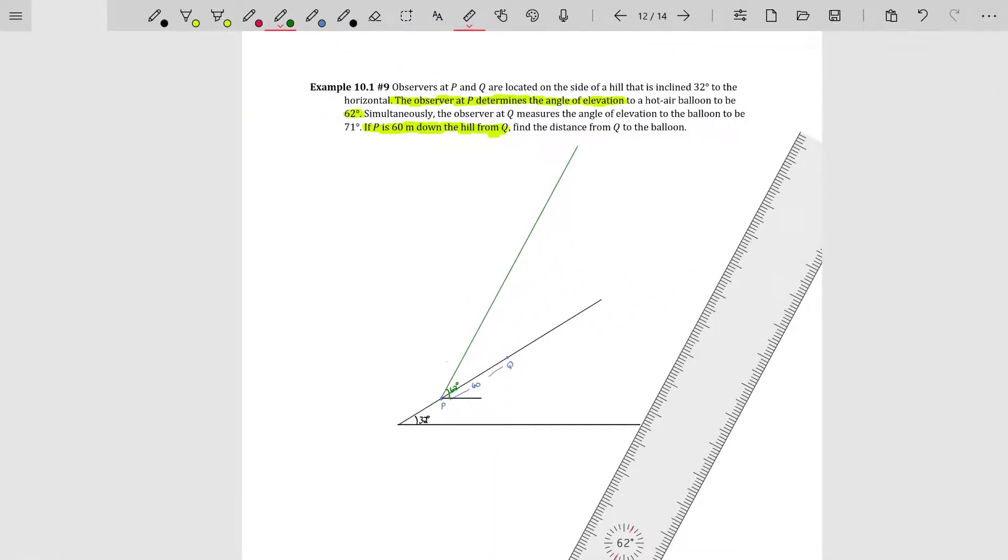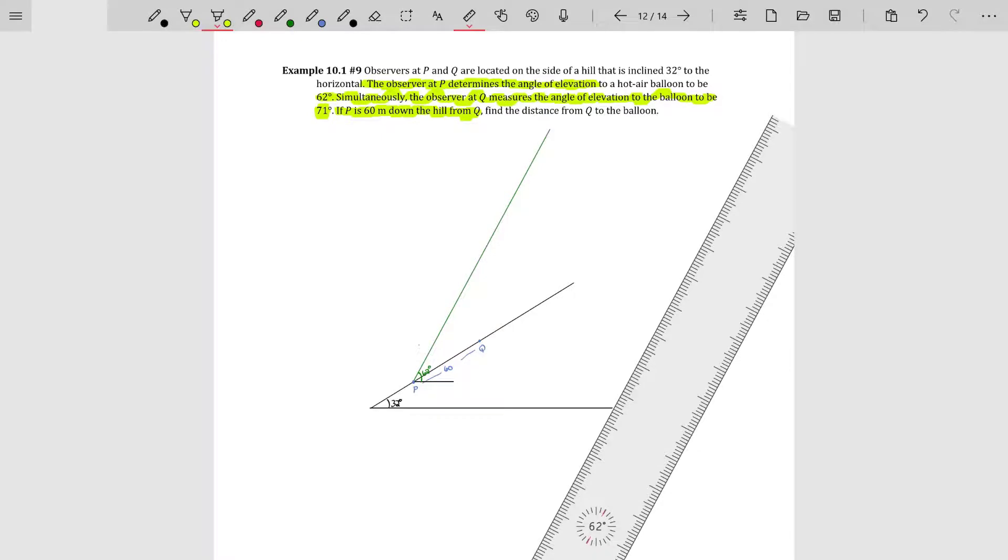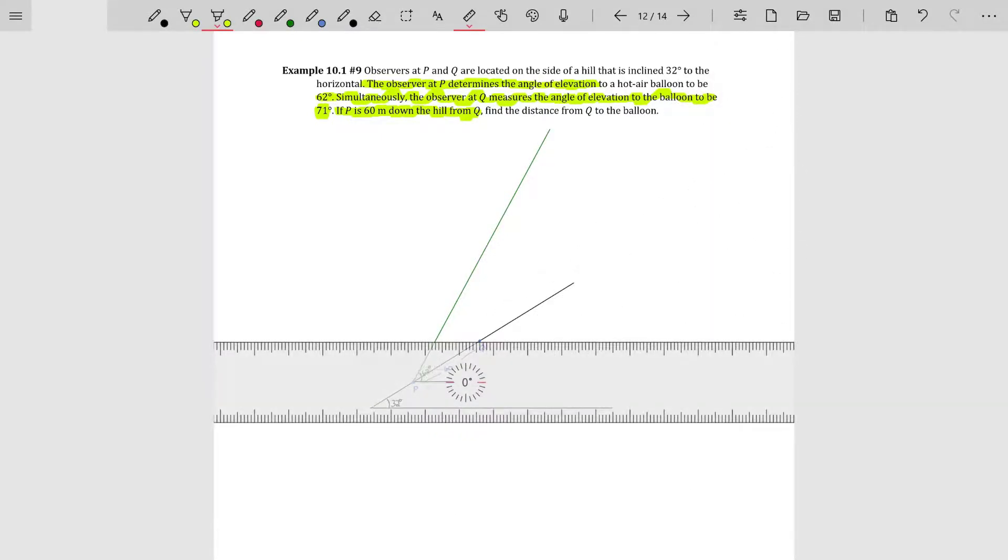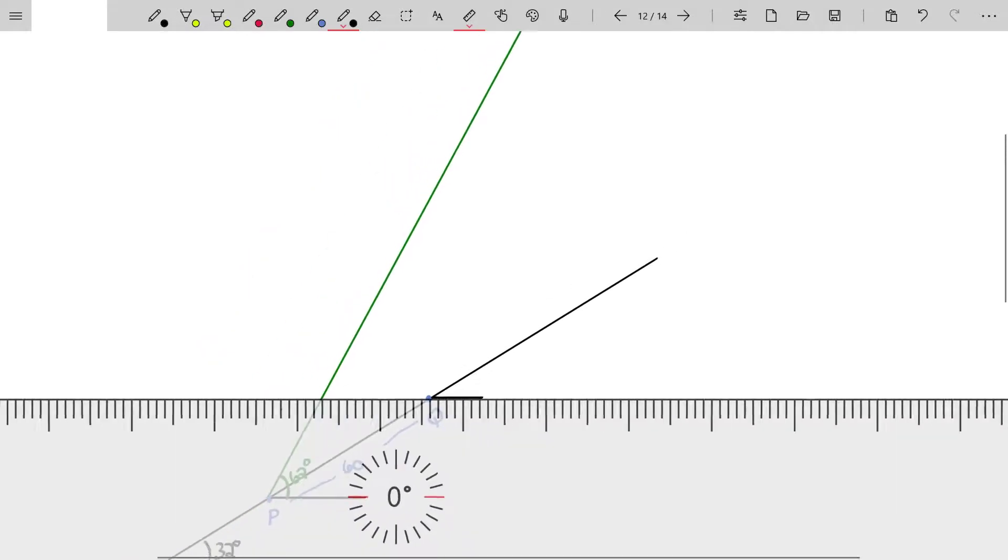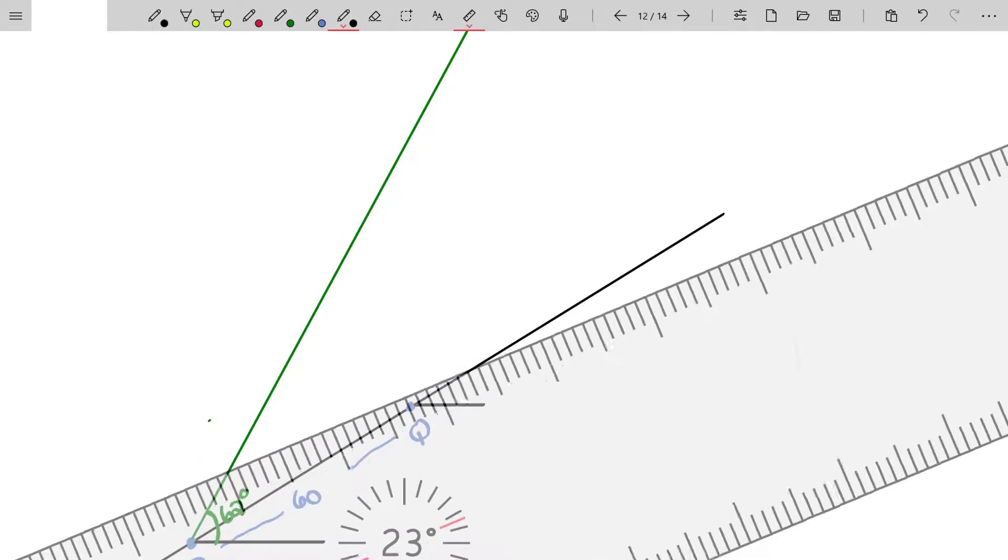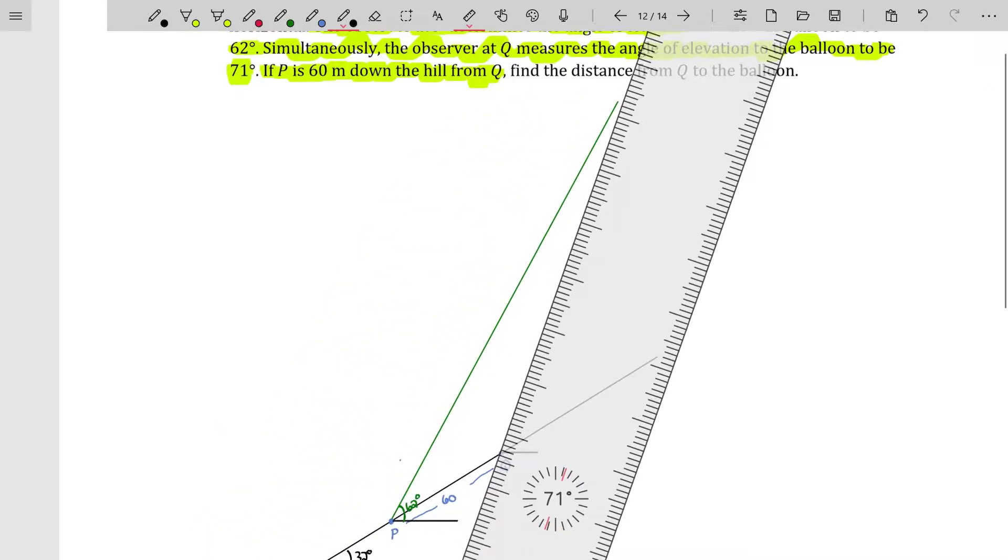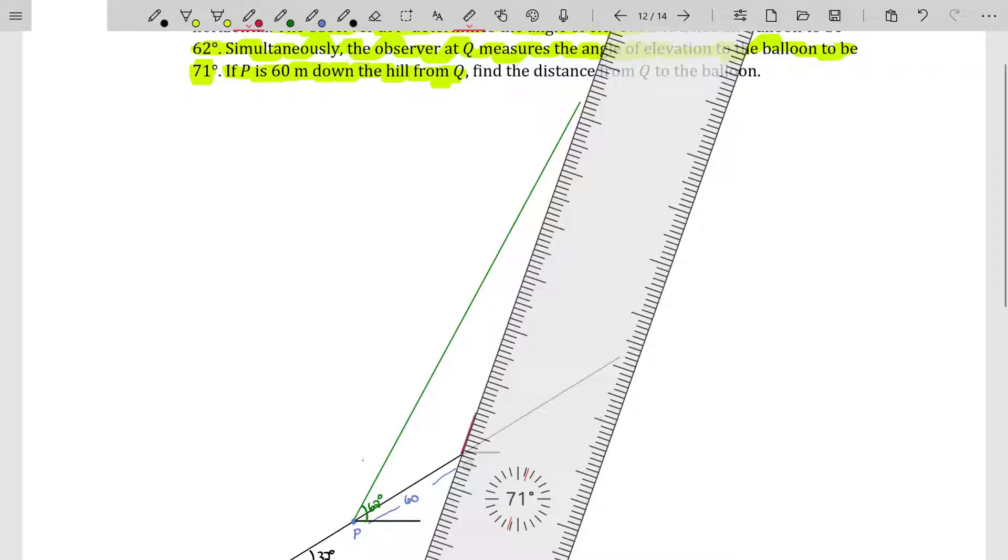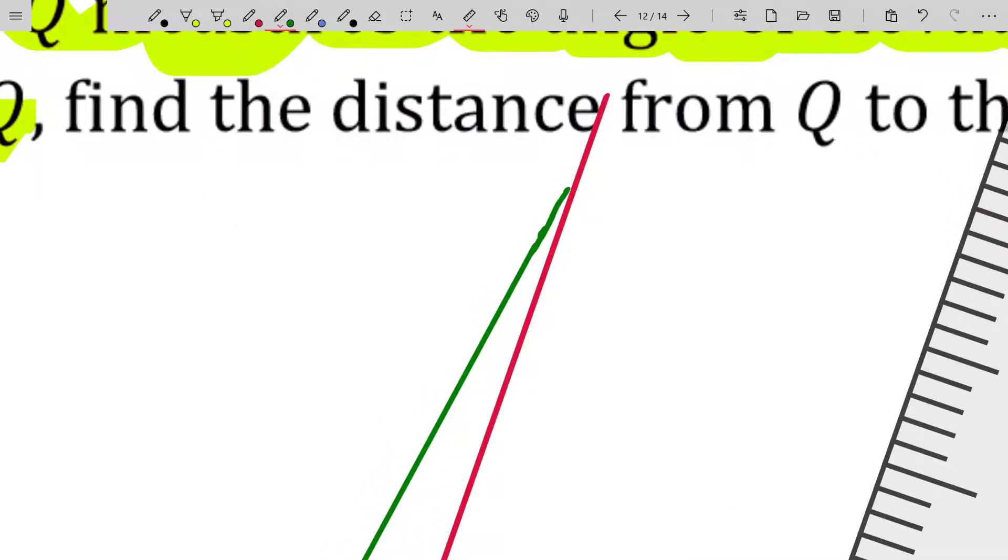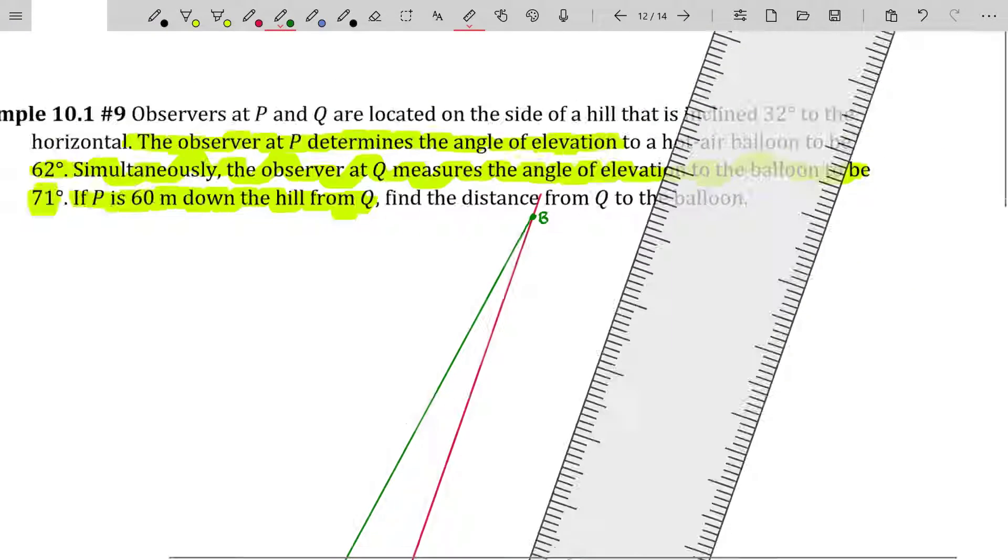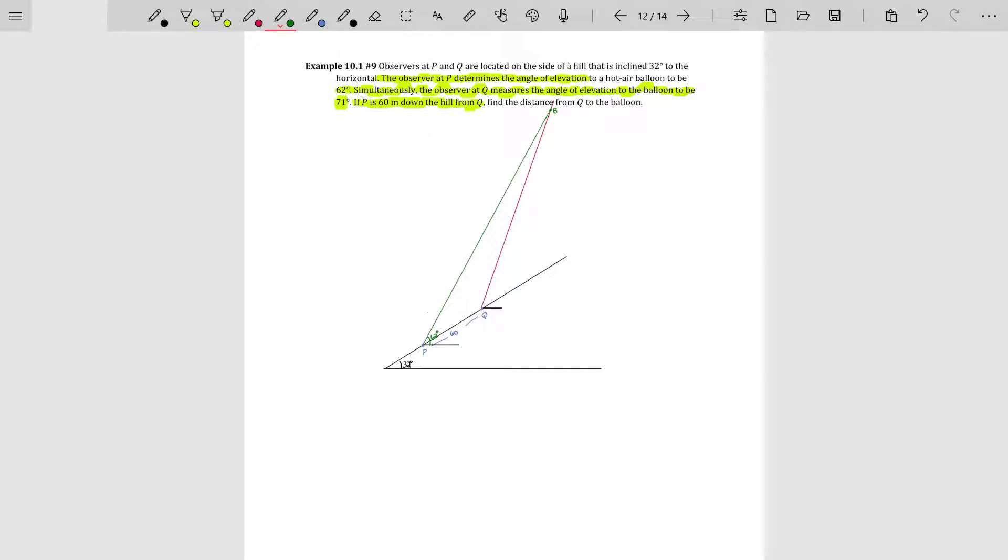The person at Q measures their angle of elevation to the hot air balloon. So 62 degrees, this angle right here, that's a 62 degree angle. Now, person Q is also going to look through an angle of elevation of 71 degrees to look at the balloon that's in the air. So they look horizontally and then look up through an angle of 71 degrees. And where are we? Right about there, 71 degrees. So obviously where these two lines meet will be the balloon. The balloon is right here.